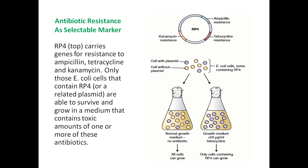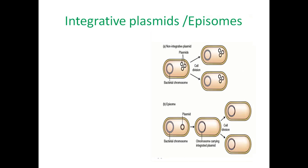RP4 carries genes for resistance to ampicillin, tetracycline, and kanamycin. Only those E. coli cells that contain RP4 or a related plasmid are able to survive and grow in a medium that contains toxic amounts of one or more of these antibiotics.